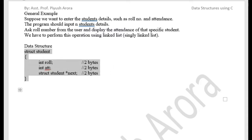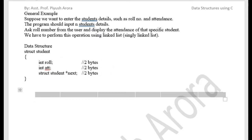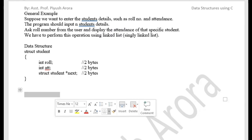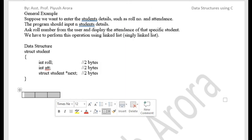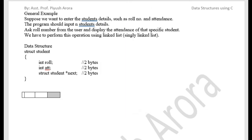Let us understand how this linked list operation will work. Suppose we first create a node. This node has three parts. The first part will be called role number — two bytes. The second part will be called attendance — two bytes. And the third part is a pointer to the next node, called star next.